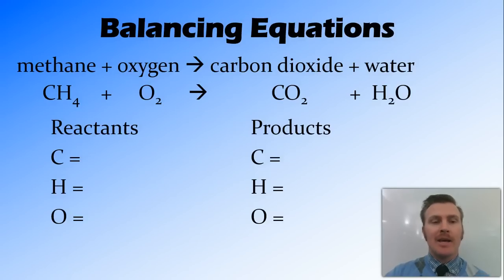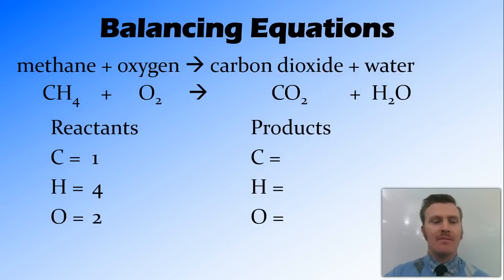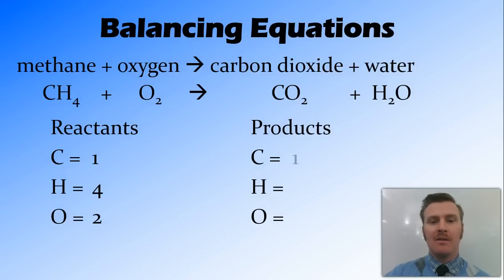First we count up the type and number of atoms on the reactant side. In methane we have one carbon atom and four hydrogen atoms. In the oxygen molecule, O2, there are two oxygen atoms. On the products side, carbon dioxide has one carbon. Water has two hydrogens. For oxygen, there are two in the carbon dioxide and one in the water, giving three oxygen atoms total. So this equation is not balanced.